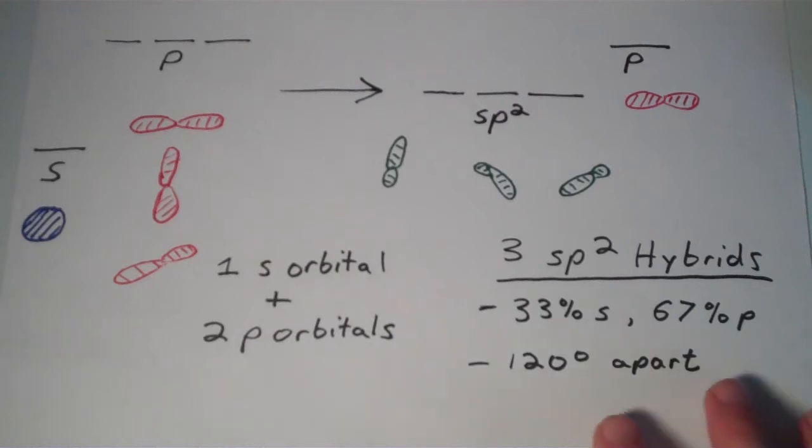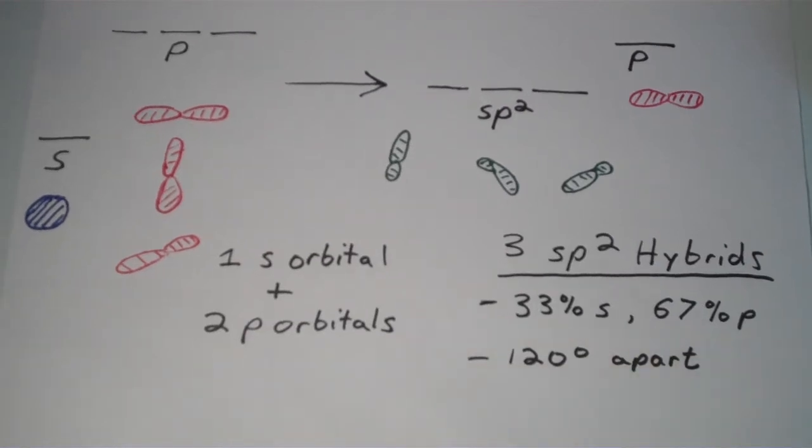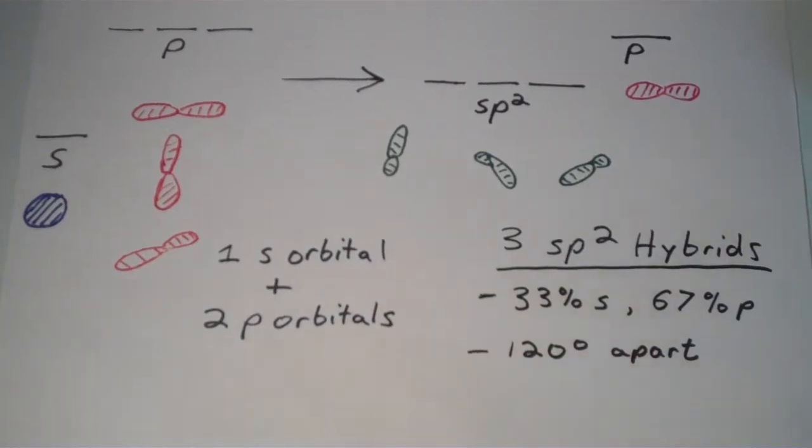And it turns out that this certain combination, this certain mathematical combination of standard atomic orbitals results in hybrid orbitals that are 120 degrees apart. So the sp² orbitals have this trigonal planar arrangement.